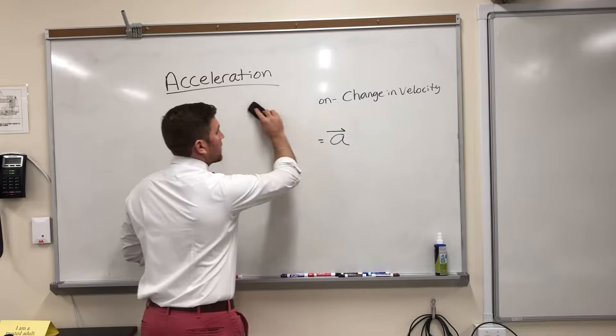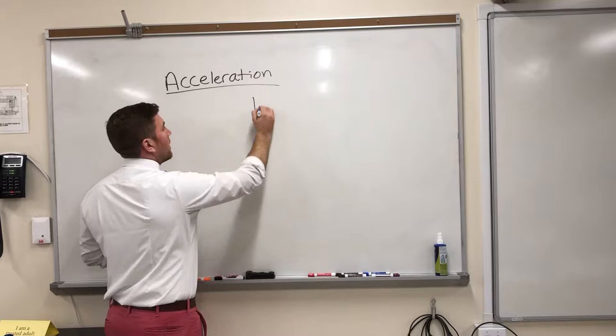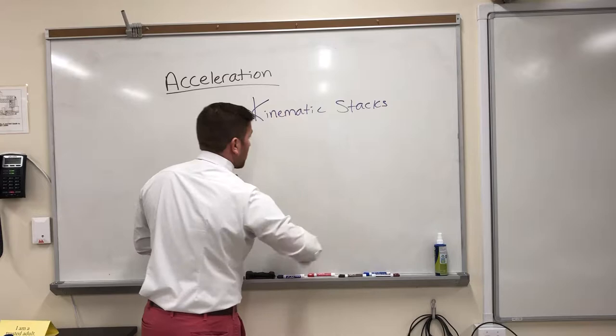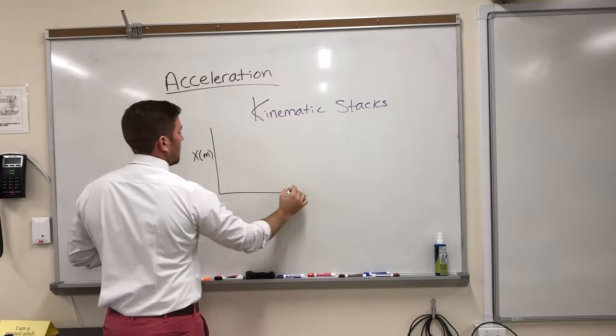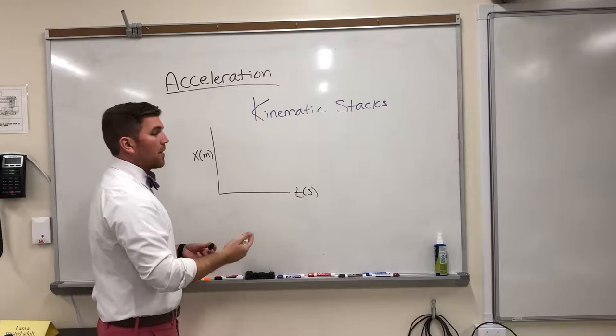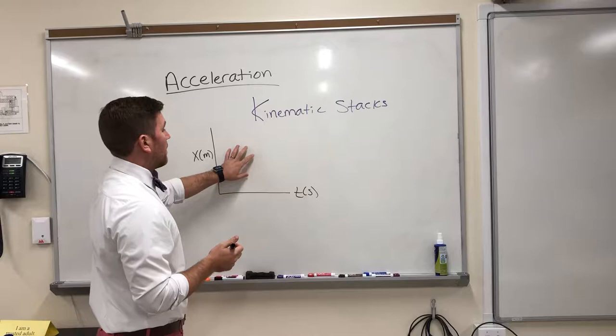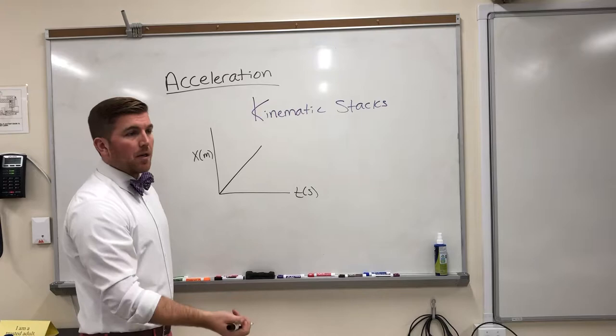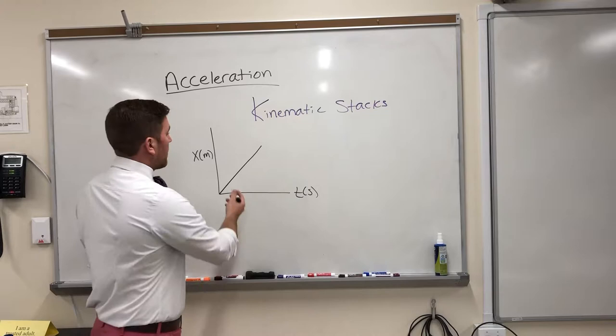The way that we're most often going to represent acceleration is through a series of graphs. And those graphs we looked at in class the other day, they're called kinematic stacks. And so it's usually a grouping of three types of graphs. Generally we start with a position versus time graph.